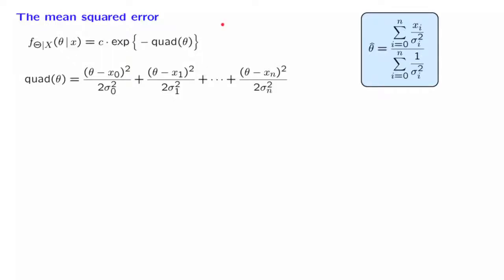We now continue our discussion of the model in which we obtain several measurements of an unknown random variable theta in the presence of additive noise, under the same assumptions as before. Theta and W_i are all independent normal random variables. We have seen that the posterior distribution of theta is normal and takes this particular form. We found the mean of the posterior distribution, which is also the maximum a posteriori probability estimate, given by this expression.